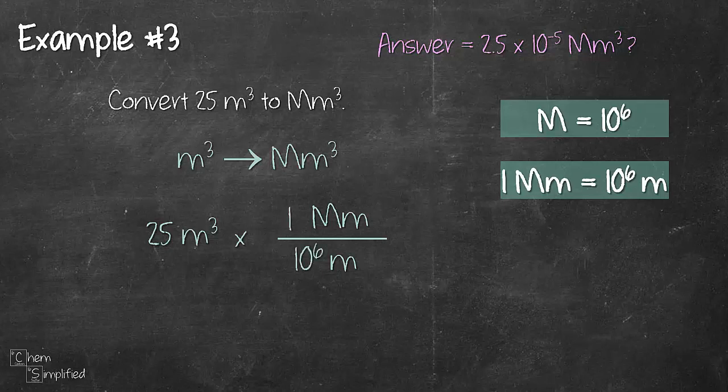So far it's the same steps as the previous example but now notice that the unit for 25 is meter cube. So that means we need to cube everything as well so that meter cube will cancel off meter cube like this.